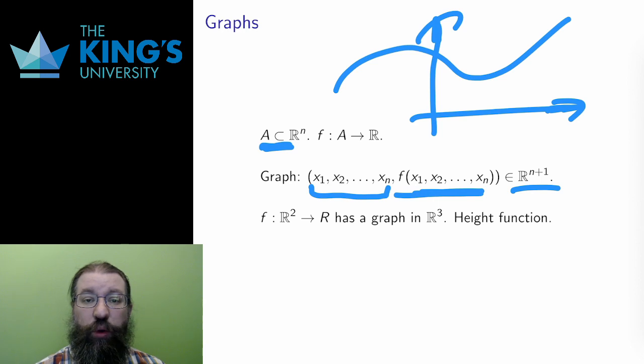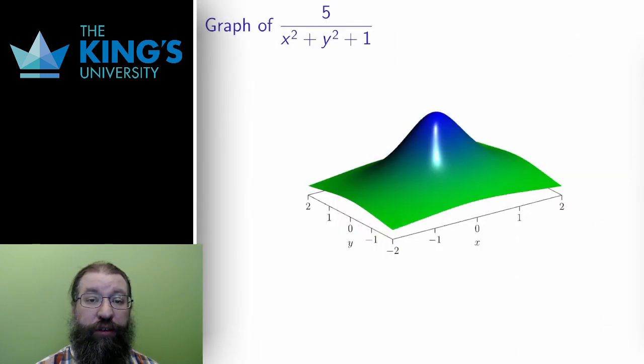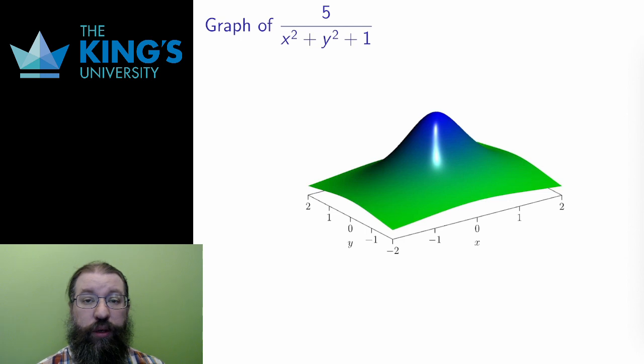That's the general form, but this is easier to talk about with two variable scalar fields. A graph of a two variable scalar field has to show both inputs and one output. That's three pieces of information, so the graph is in R³. Here's the graph of the scalar field f(x,y) = 5/(x² + y² + 1). Or at least this is a portion of the graph for inputs between -2 and 2 in both variables.